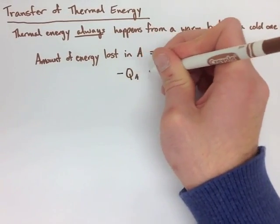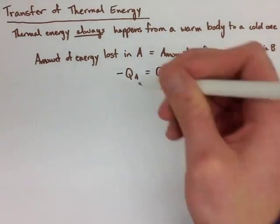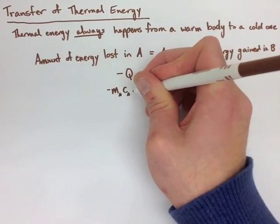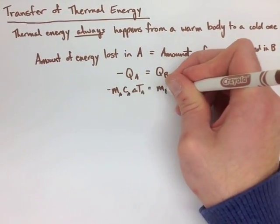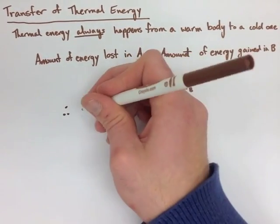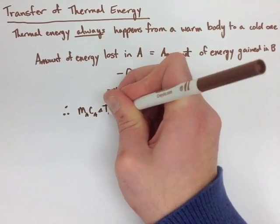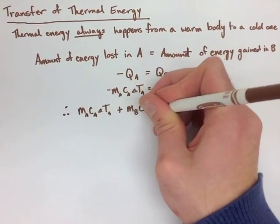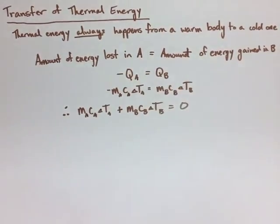So the negative thermal energy of A is equal to the positive thermal energy of B, and we can sub in all of our values but just use subscripts and have a negative value for A. What this actually means though, if we add up the thermal energy in A and the thermal energy in B, we should get zero.